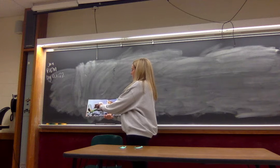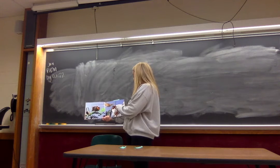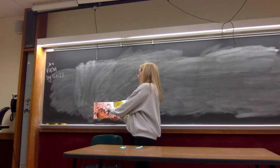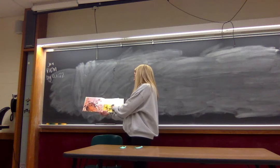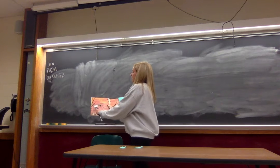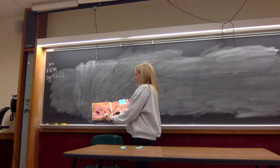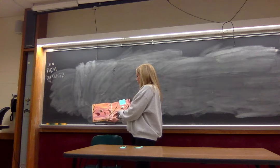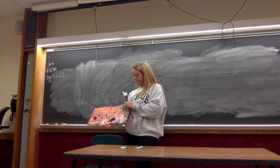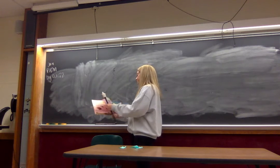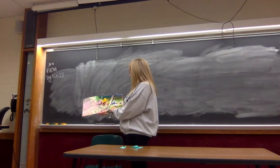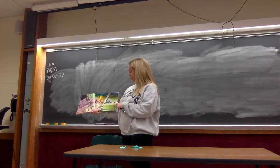Two-spotted stink bug, white-lined sphinx, tiger moth, underwing hiding pink. Cockroach, earwig, firefly, flower fly. Ant ant ant! May beetle, June beetle, corn beetle, click, woolly bear, water strider. Guess what this is? A walking stick. Walking stick!